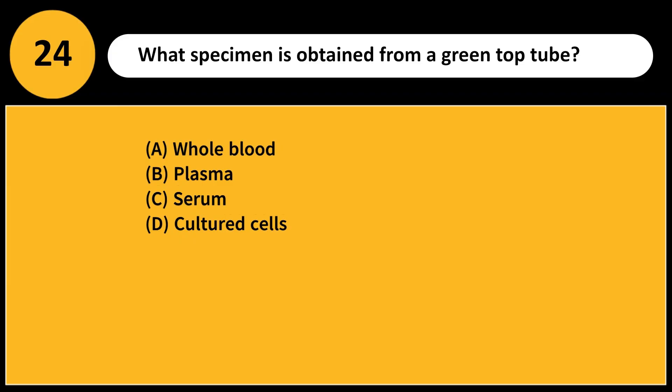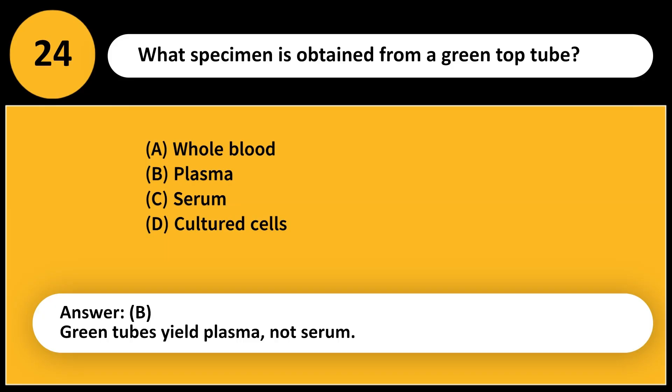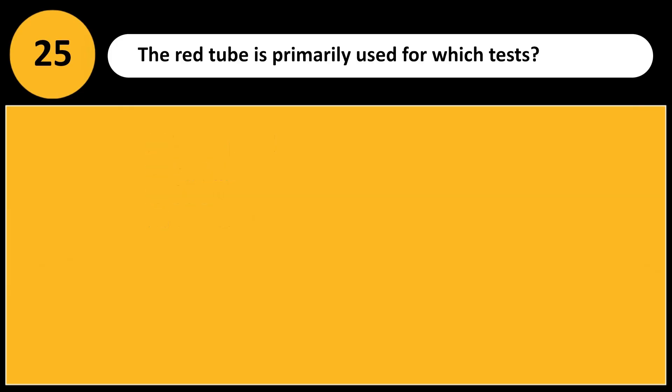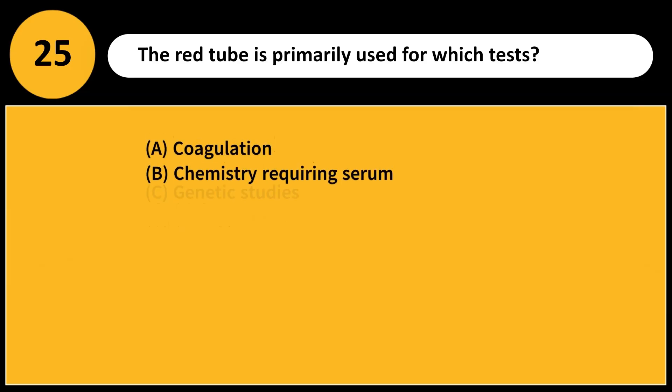What specimen is obtained from a green-top tube? A. Whole blood. B. Plasma. C. Serum. D. Cultured cells. Answer: B. Green tubes yield plasma, not serum.